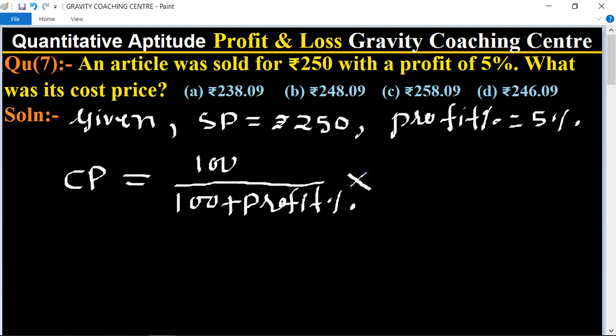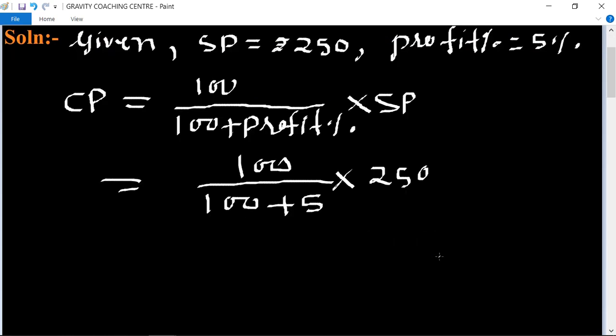So equals 100 divided by 100 plus 5, times 250. This equals 100 divided by 105, times 250, which equals 5000 divided by 21.